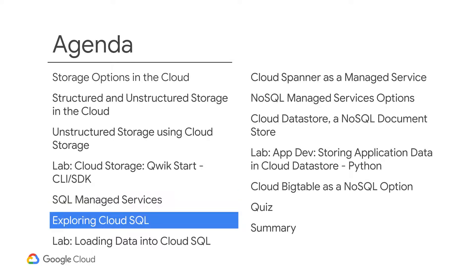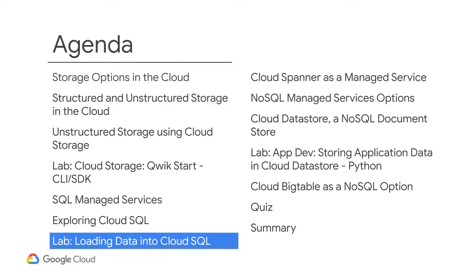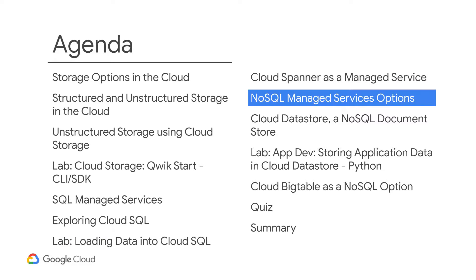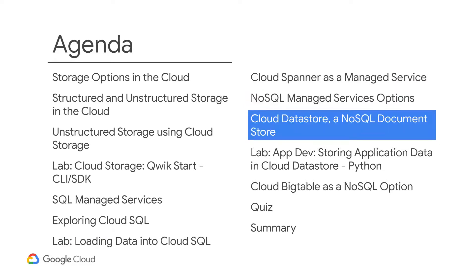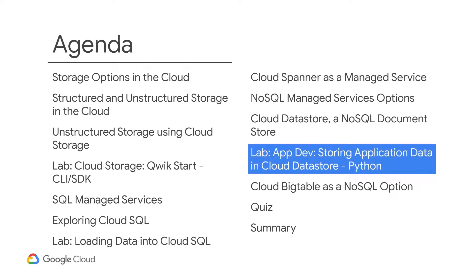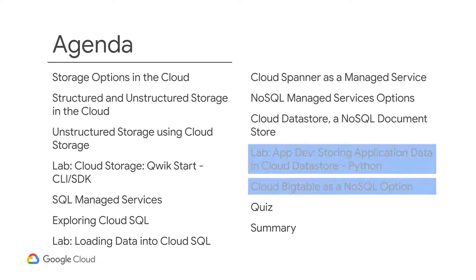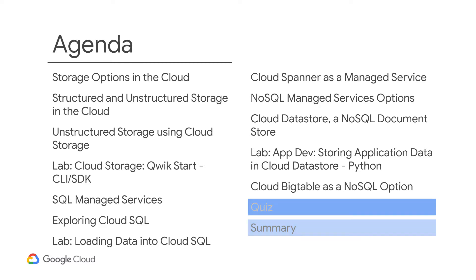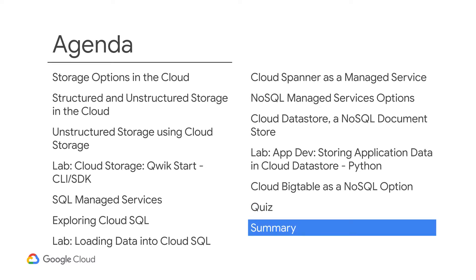Next, you will explore Cloud SQL, and then complete another lab where you will import data into Cloud SQL and perform basic data analysis. You will discover how to leverage Cloud Spanner and explore the available NoSQL options. You will then learn how to use Cloud Datastore as a NoSQL document store, and complete an app development activity that requires you to store app data in Cloud Datastore. And then you will learn how Cloud Bigtable can be leveraged as a NoSQL option. The module will end with a short quiz and a recap of the key learning points covered in the module.